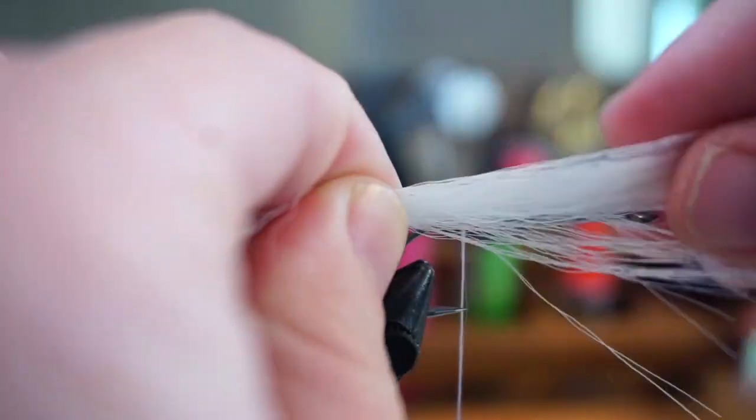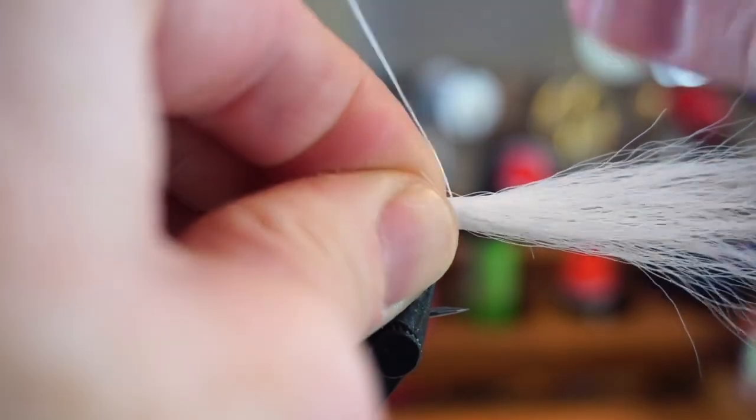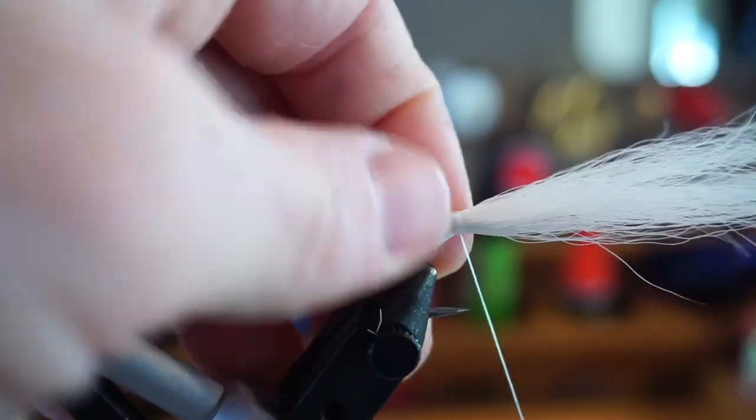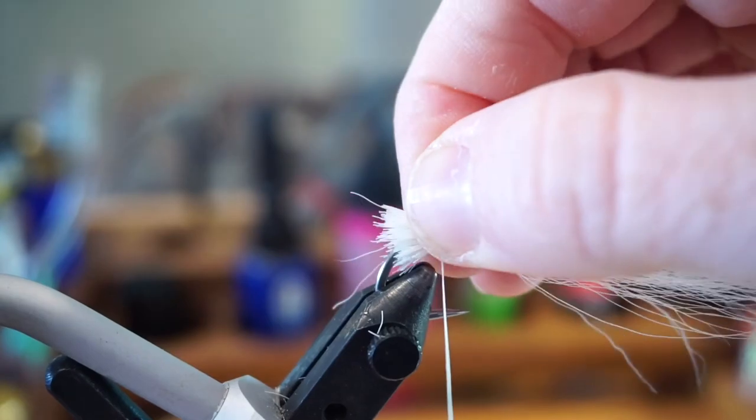Measure the bucktail to about two times the hook length and trim it to size. Then with the ends of the fiber facing toward the hook eye, tie the clump down with three loose wraps so just a small amount of the butt sticks out the back. Push down with your thumb and pinch the fibers in order to arrange them around the hook shank.